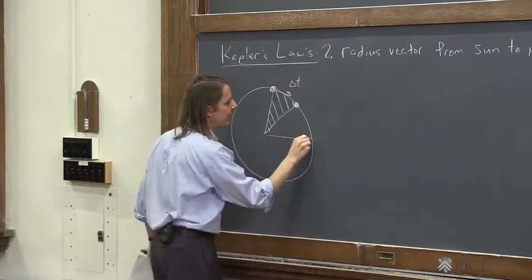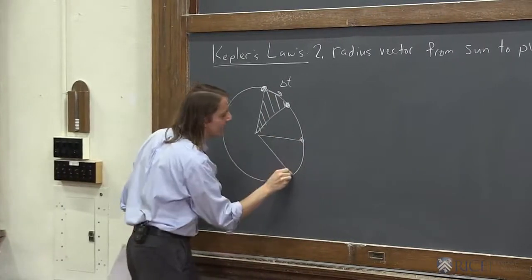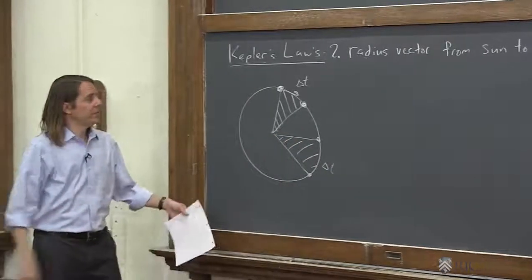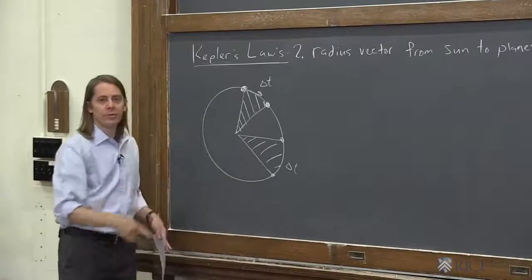If you pick two other times, say here, and waited the same delta t here, you'll get the same area. And the reason is, we know for simple circular motion, the speed is constant.